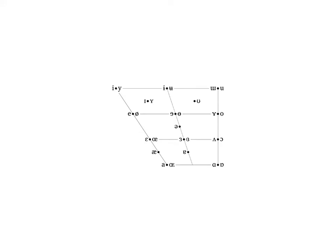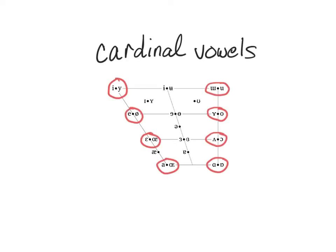This is the full set of base symbols for vowels in the IPA. A subset of these, called the cardinal vowels, are defined with respect to certain extreme articulations: the highest, the frontest, the lowest, the backest, the most round, and the most spread possible, while still having a vowel.